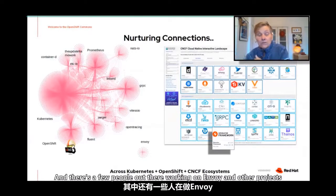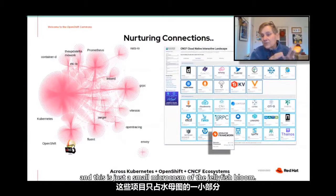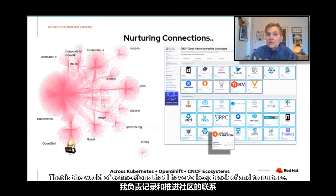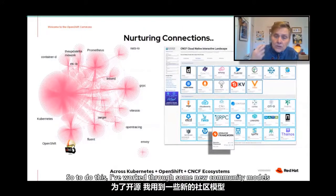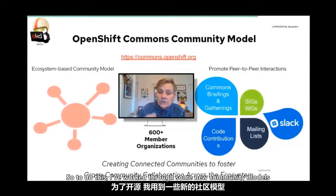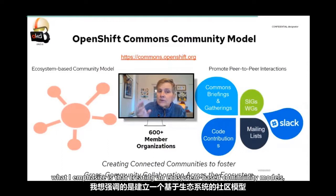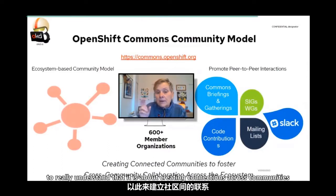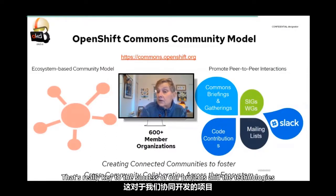You can start to see the connectivity just at the coding level alone between projects like OKD — the open source sibling to OpenShift — the OpenShift Red Hat engineers who are connected to the Kubernetes project, who are also connected to Jaeger and OpenTracing, and a few people working on Envoy and other projects outside the CNCF. This is just a small microcosm of the jellyfish bloom that is the world of connections I have to keep track of and nurture. It's really an amazing time to be in open source.